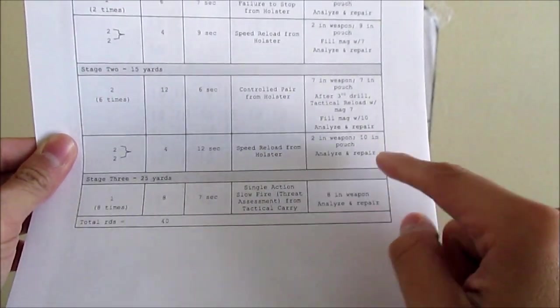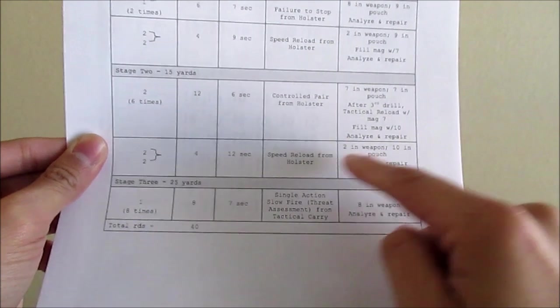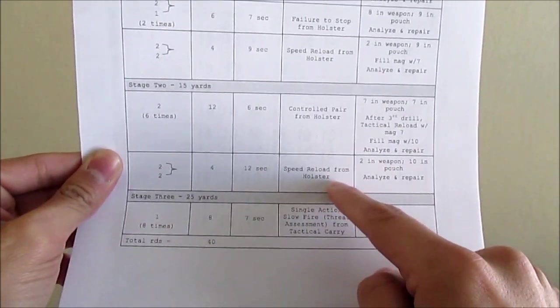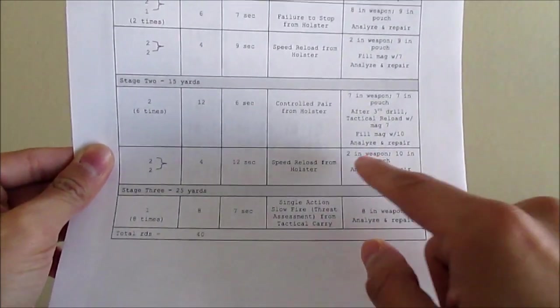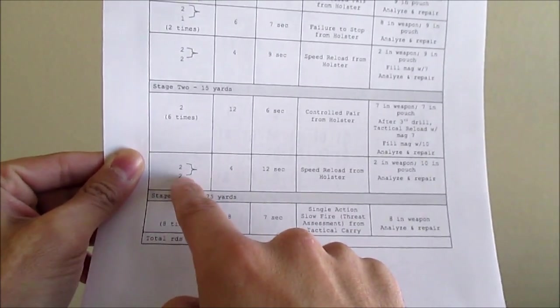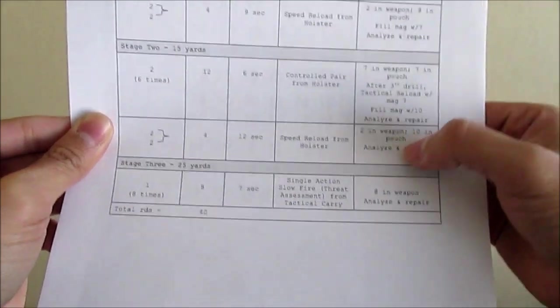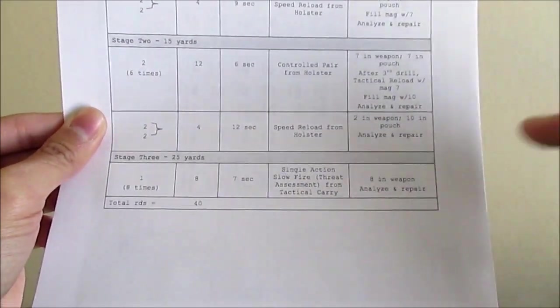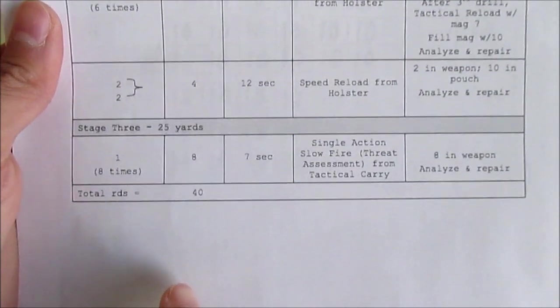At this step, you'll have 2 in the weapon. So they want you to do a speed reload again. So after you draw, take your 2 shots, do a speed reload, take your other 2 shots. After that, so after the 15 yards, you'll only have 8 left. For these last 8 shots, you actually don't have to draw from the holster. And you get to shoot the Beretta in single action.